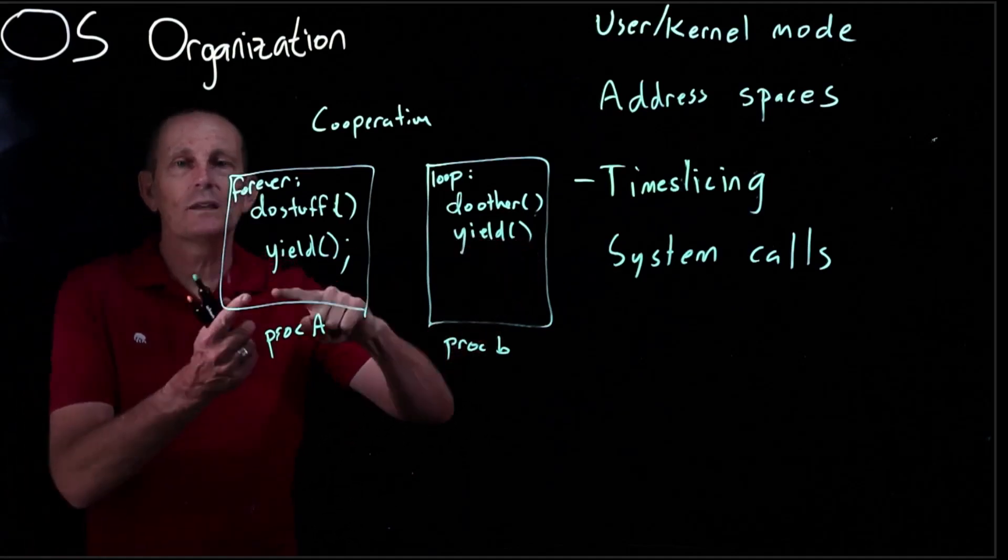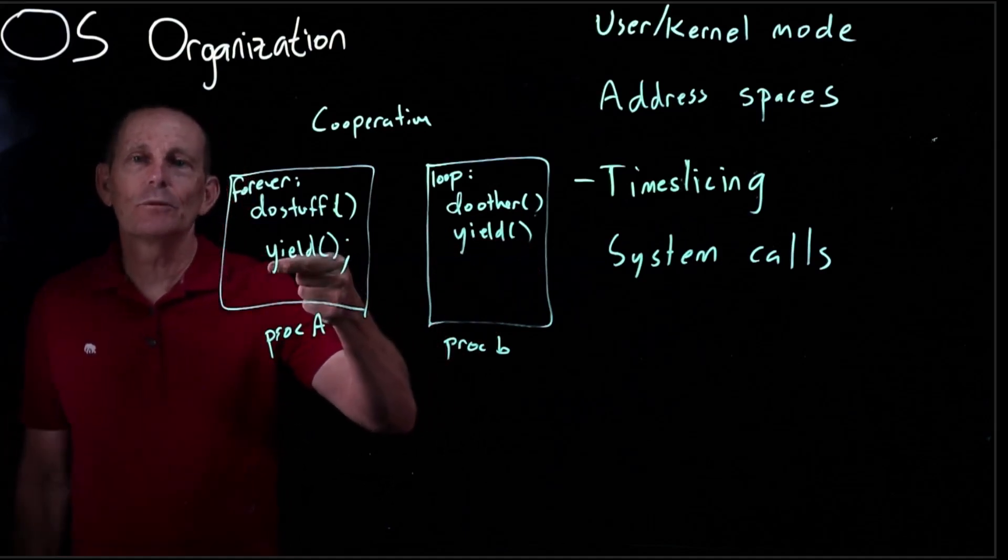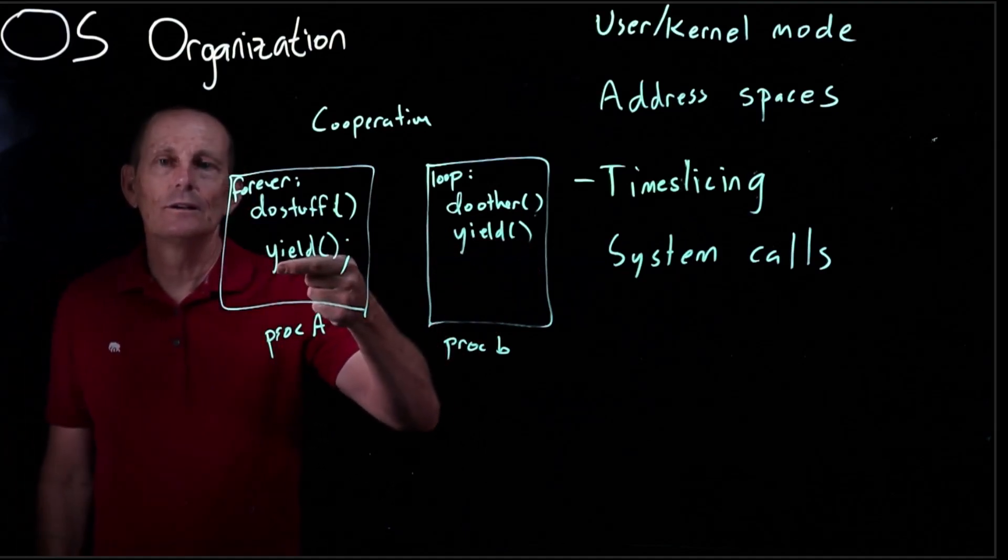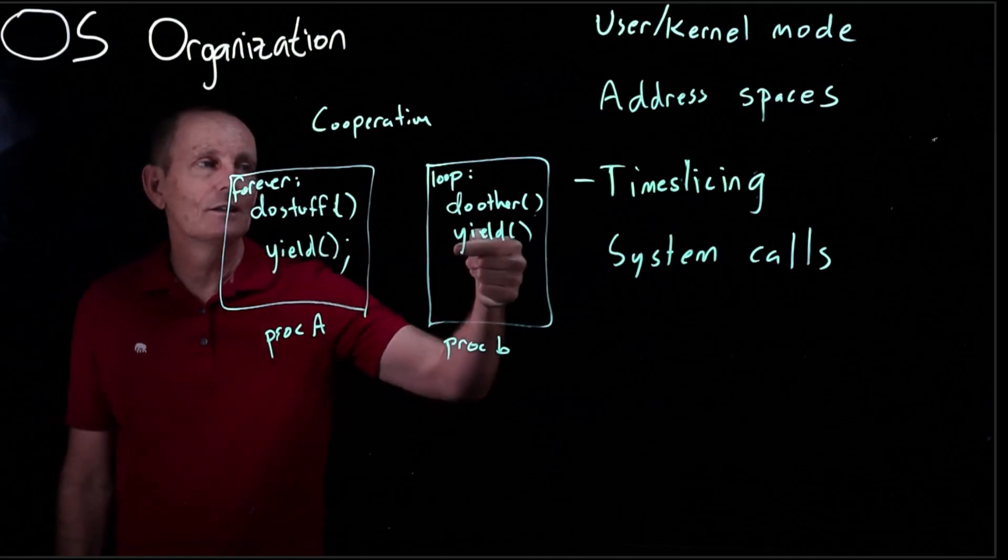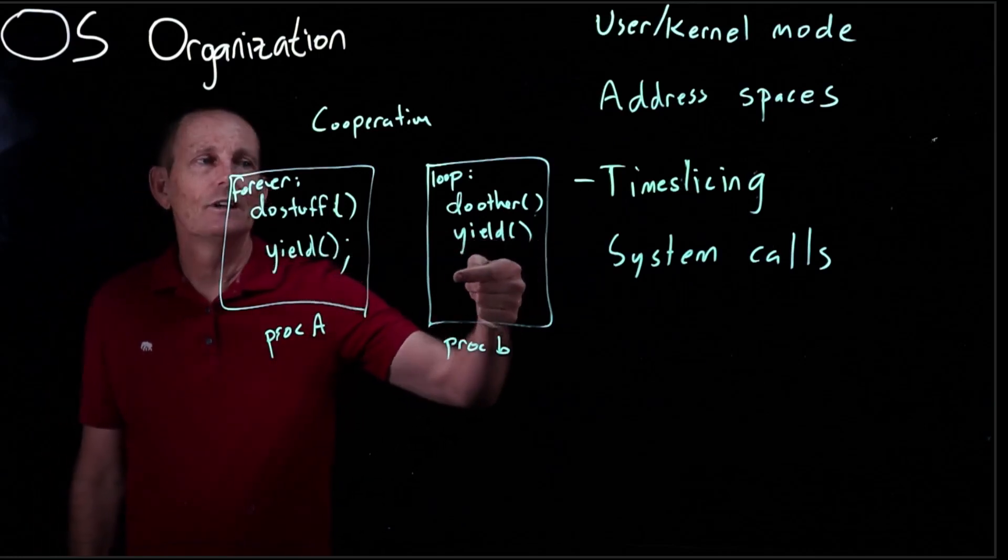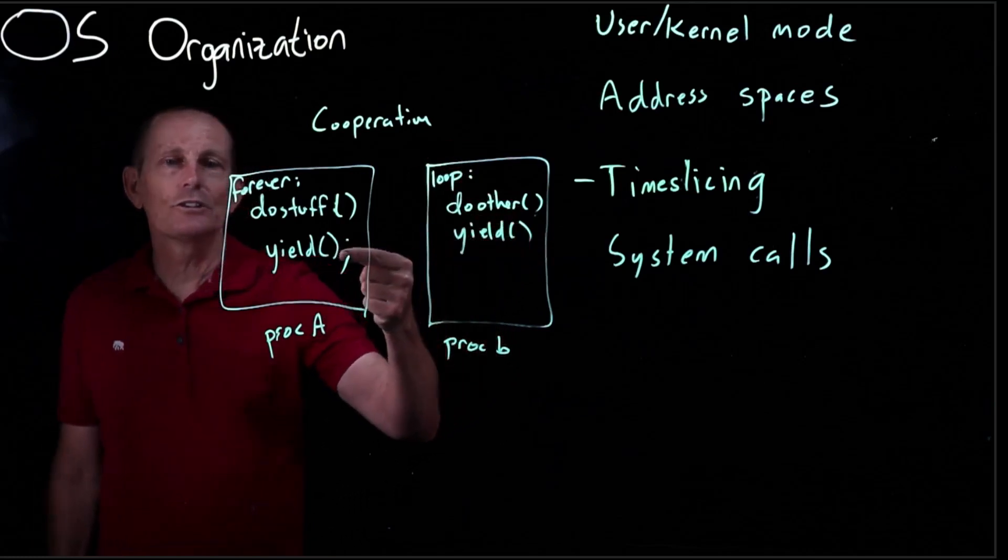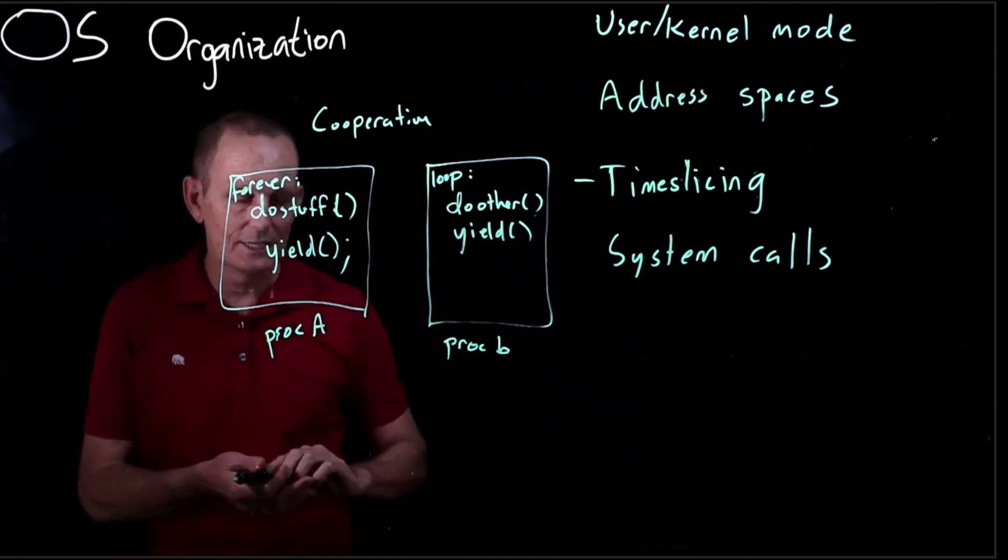So we're gonna have this ping-ponging back and forth where calling yield here returns from yield here and then we come back and call yield here that'll cause a return here. This is called coroutines.